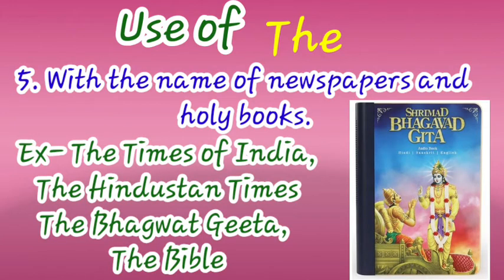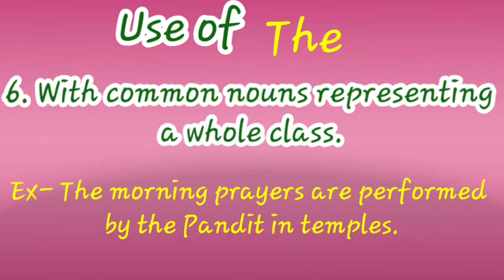The fifth use of 'the' is with the names of newspapers and holy books (dharmik granth). For example: 'the Times of India,' 'the Hindustan Times' — these are newspaper names. 'The Bhagavad Gita' and 'the Bible' — these are holy books. The sixth use is with common nouns representing a whole class. For example: 'The morning prayers are performed by the Pandit in the temples.'